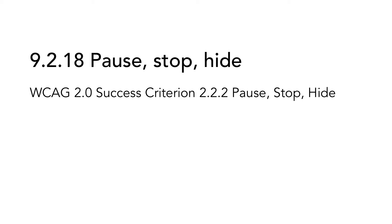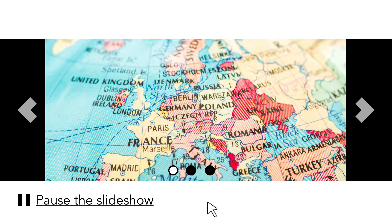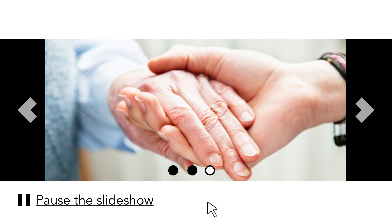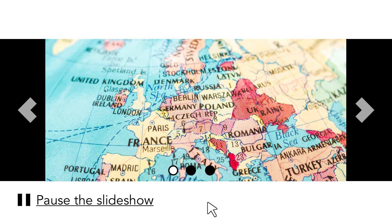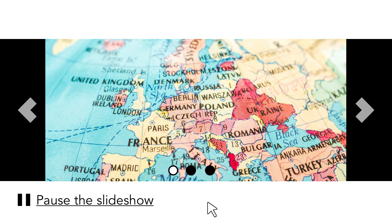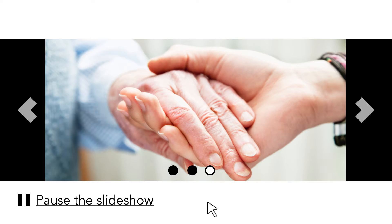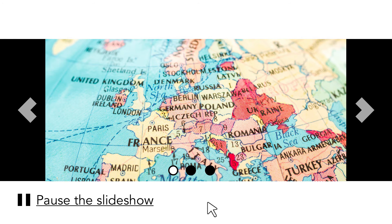9.2.18 Pause, Stop, Hide is based on WCAG 2.0 Success Criterion 2.2.2 Pause, Stop, Hide. Moving, scrolling and blinking objects can be very stressful and distracting for some users. If a part of the interface is moving or changing by itself, it can become difficult to keep focus on other parts. If the user has severe concentration problems, it might mean that the whole website becomes inaccessible. Therefore, you should avoid using moving, shifting, scrolling and blinking content if it does not add something important to the user.